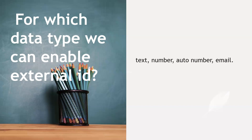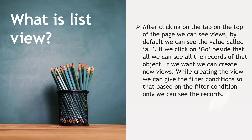What is a list view? A list view allows you to configure and display specific records. After clicking a tab, you can see records such as recently viewed ones. You can also create new views with filter conditions to display only the records that match those conditions.